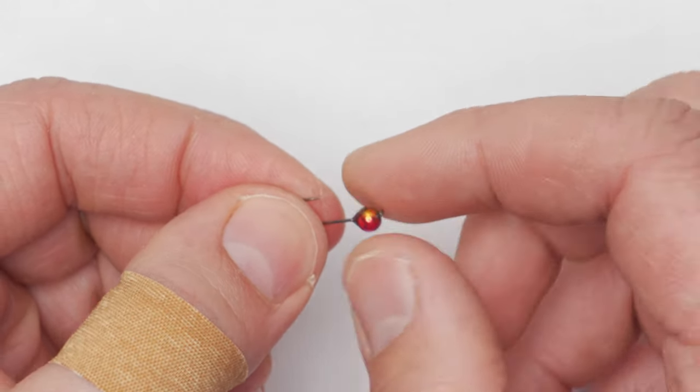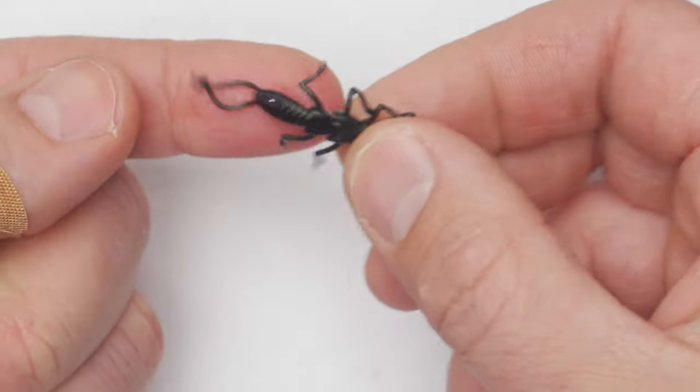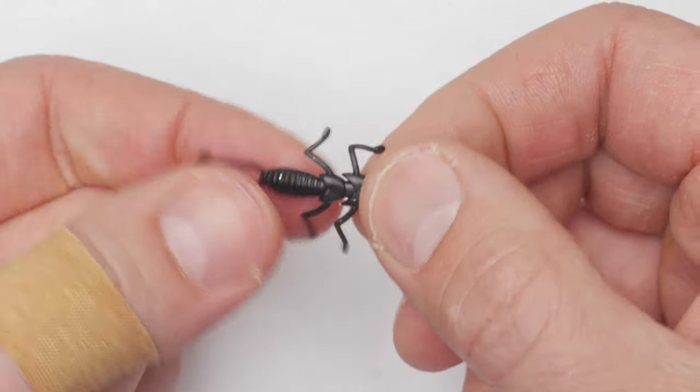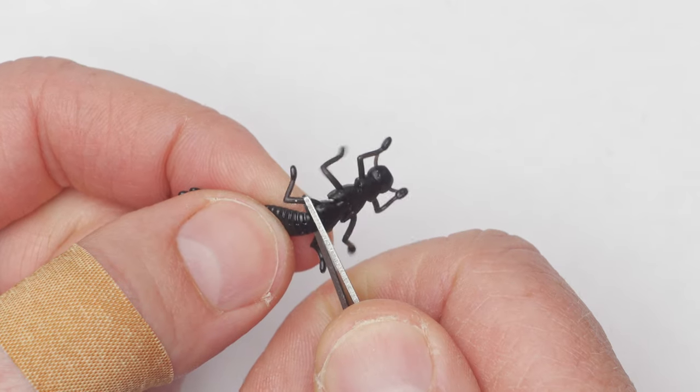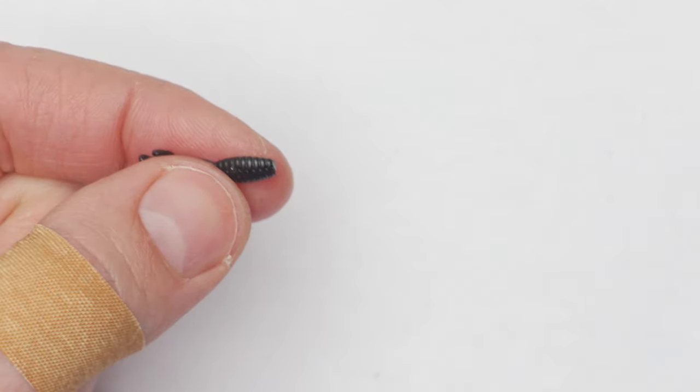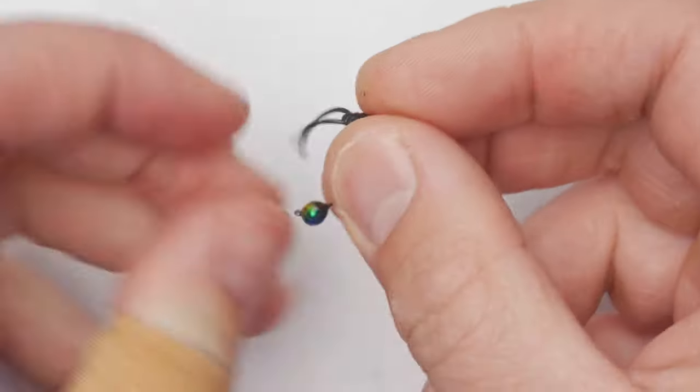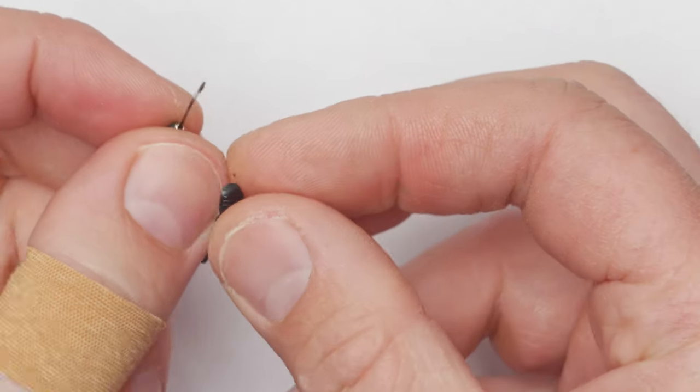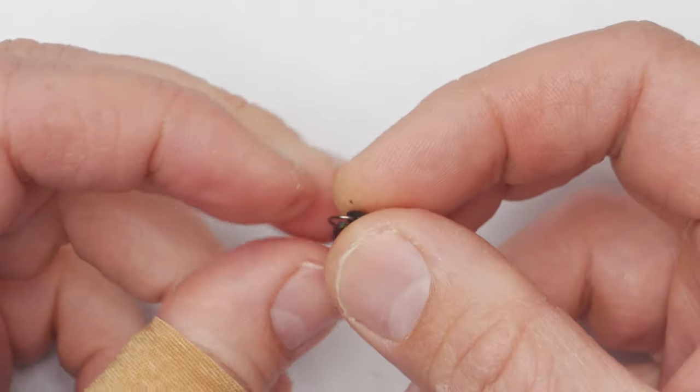Once you have your tiny jig head, obviously you want to match the lure. For example, I have this one. Even though it's a tiny little thing, I will cut it in half. I could use this side as well, but let's say I want to have a super delicate presentation, so I just will use the tail, and you will see how this setup will look.